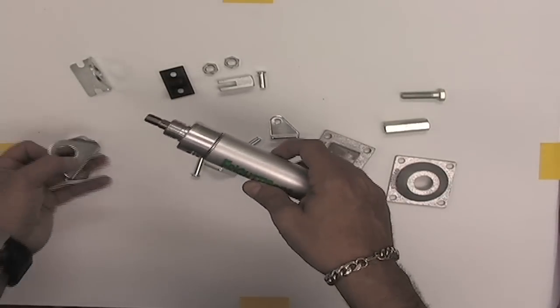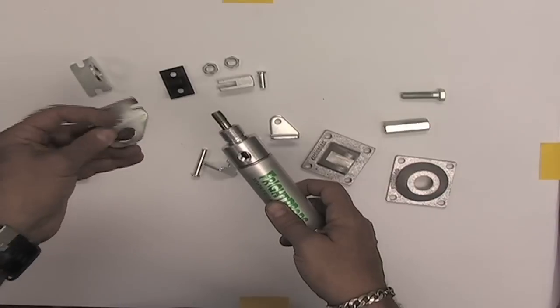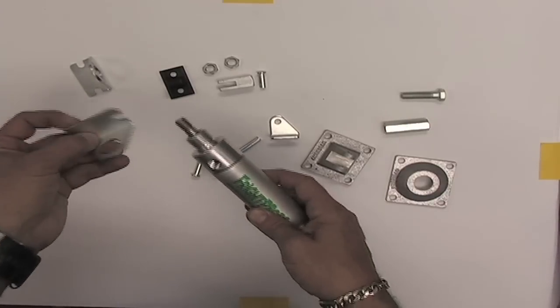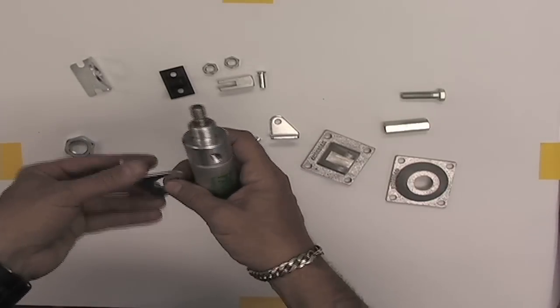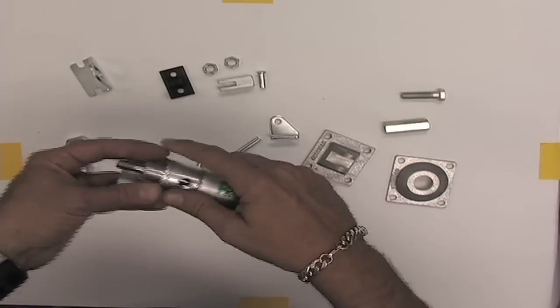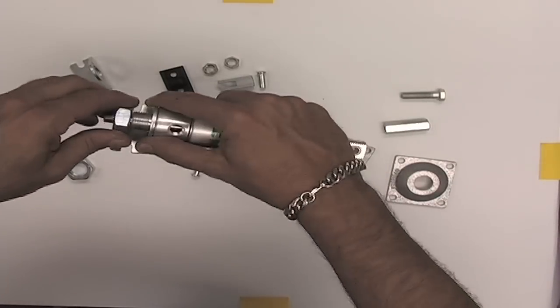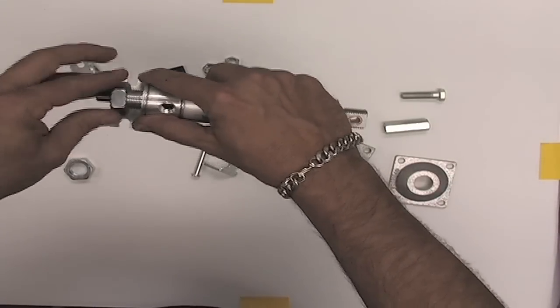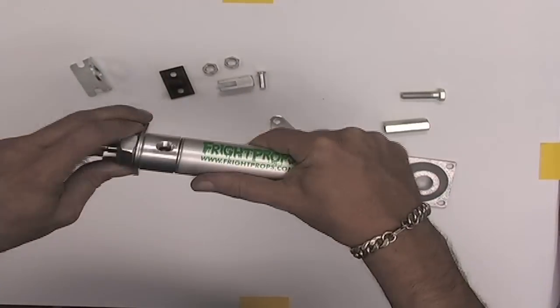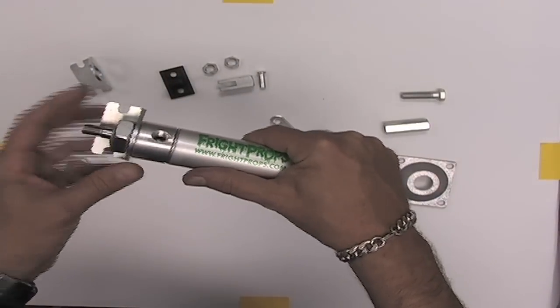You can also rigidly mount a cylinder with side mount brackets. This is a side mount bracket. You can put one on the front and use these cylinder mounting nuts to mount it. Our side mount brackets come with a cylinder mounting nut.